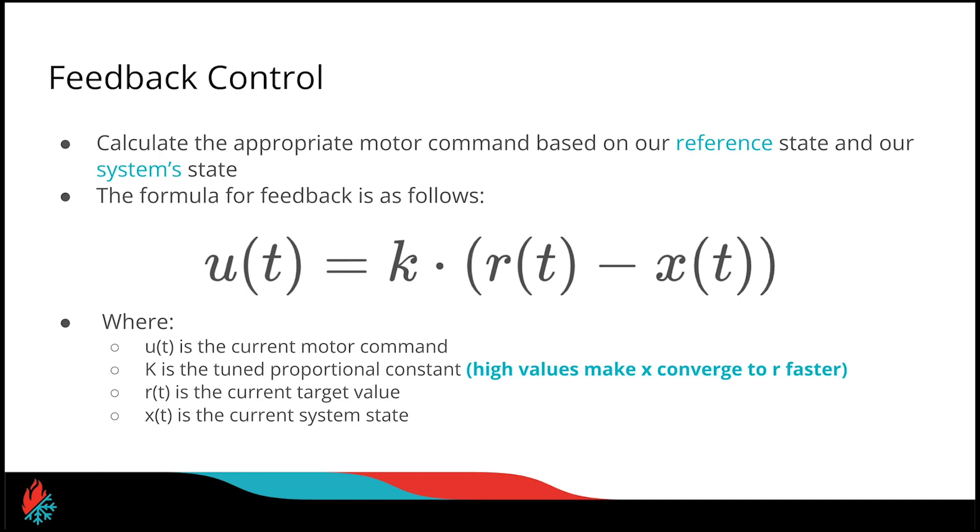So as I said, u is our current motor command, the motor power that we send to our motor. k is a constant that we'll tune, we'll talk about this in a second. r is the target position or target velocity, and x is our measured or observed target velocity.